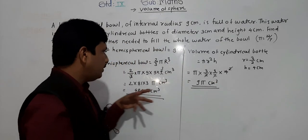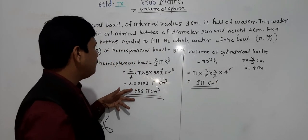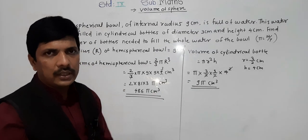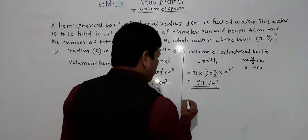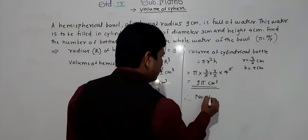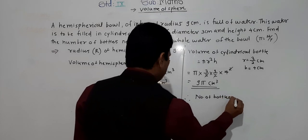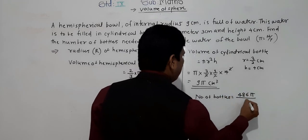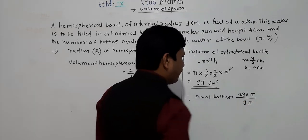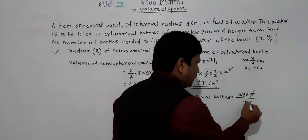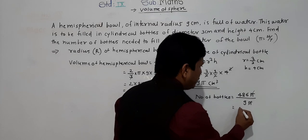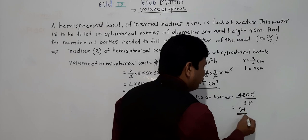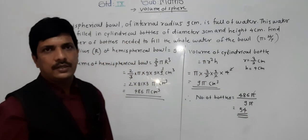Number of bottles equals volume of hemispherical bowl divided by volume of one cylindrical bottle, that is 486 pi divided by 9 pi. Pi cancels, and 486 divided by 9 equals 54. So 54 is the correct answer — 54 bottles are needed.